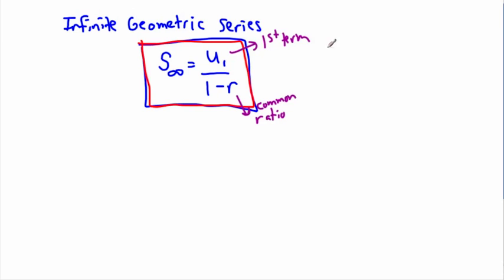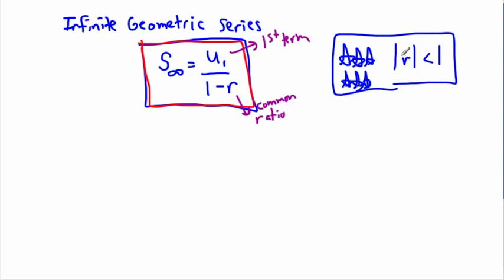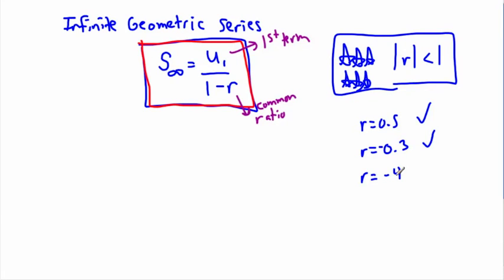There is a really important condition that must hold. The absolute value of r must be less than 1 — this only works if that is the case. For example, if r is 0.5, that works. If r is negative 0.3, the absolute value is 0.3, which is less than 1 — that works too. But if r is negative 4 or r is 5, those absolute values are greater than 1, so it does not work. Effectively, r must be between negative 1 and 1.